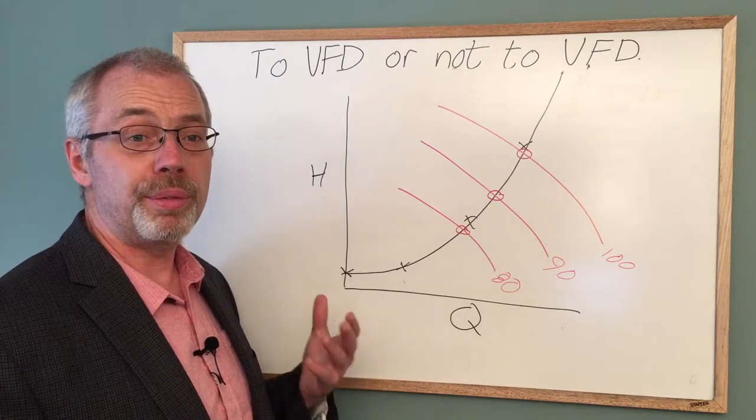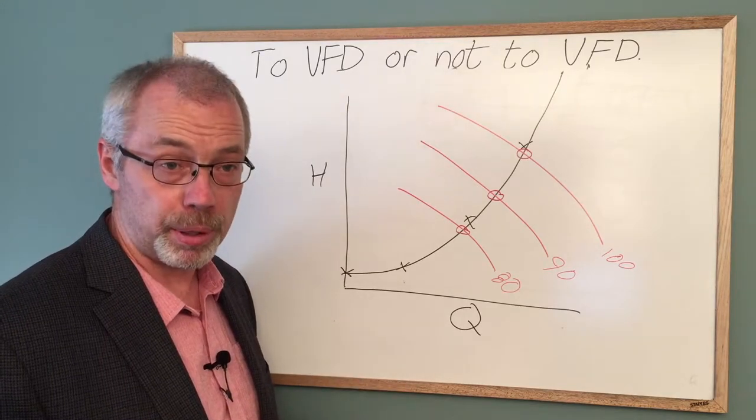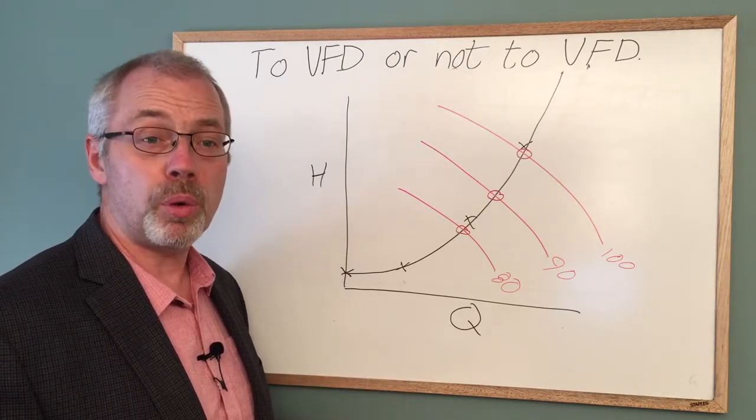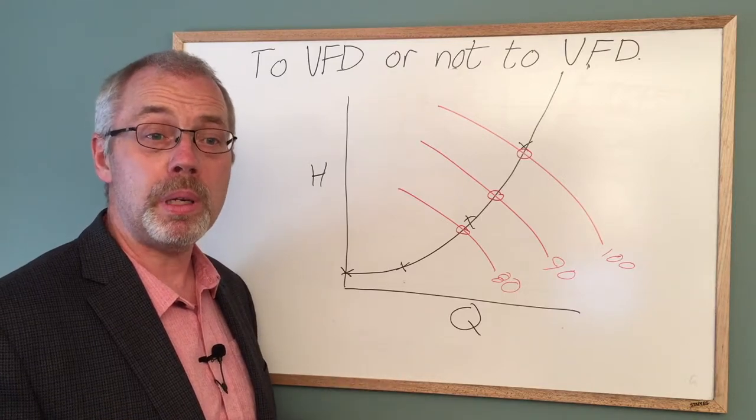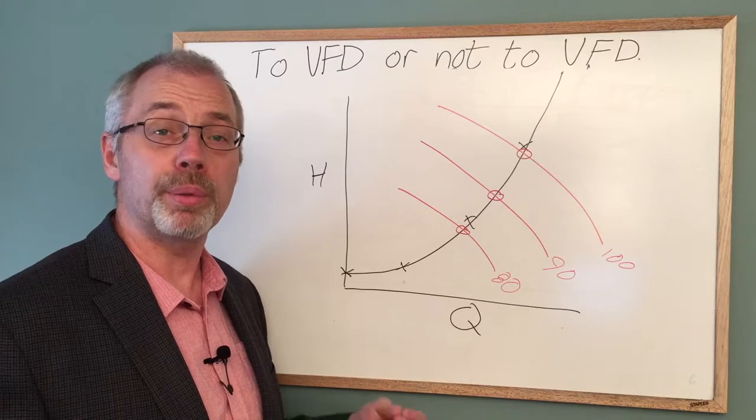This is an example for a friction dominated system and a steep pump curve. There is a uniform relationship between the pump speed and flow rate. This is a very good application for a variable frequency drive.